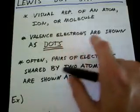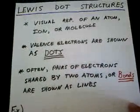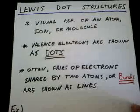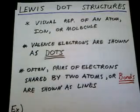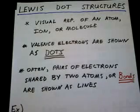All valence electrons are shown and they're shown as dots. And more often than not, you'll see that pairs of electrons that are shared by two atoms, or more commonly known as bonds, are actually shown as lines instead of dots. It makes it a little bit easier.